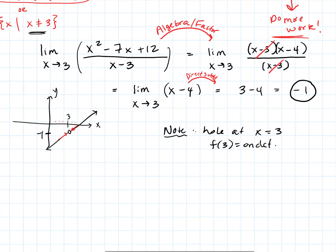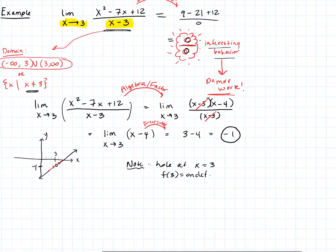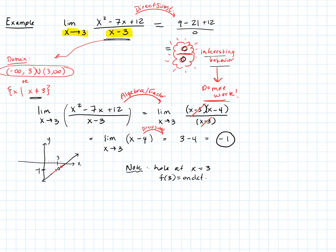What allows us to do that? Our process: try direct substitution. If we get division by 0 — and this one gave us 0 over 0, which is very interesting behavior — it means we have to do a little more work. We go to our pre-calculus techniques; in this case it was algebra, factoring the rational function. We utilized algebraic techniques, did some factoring, then used direct substitution, and got the limit of negative 1.